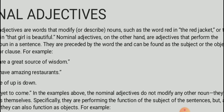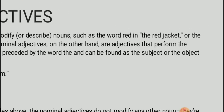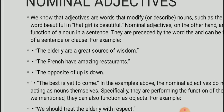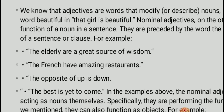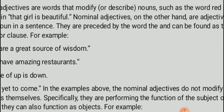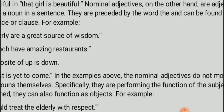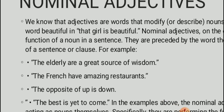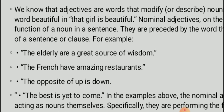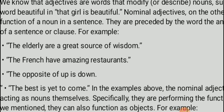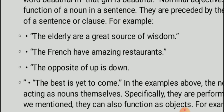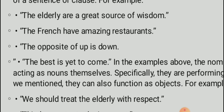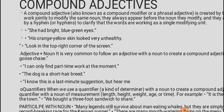Nominal adjectives are adjectives that perform the function of a noun in a sentence. Regular adjectives modify nouns — for example, 'red' in 'the red jacket,' or 'beautiful' in 'the dead girl is beautiful.' Nominal adjectives, by contrast, are preceded by 'the' and can function as the subject or object of a sentence. For example, 'The elderly are a great source of wisdom' — here 'the elderly' is the subject. Similarly, 'The French have amazing restaurants' — 'the French' represents all French people and functions as the subject.